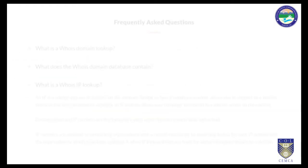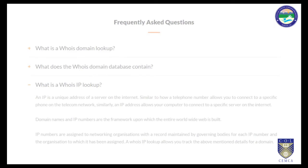What is the WHOIS IP lookup? An IP is a unique address of a server on the internet — very much similar to how a telephone number allows you to connect to a specific phone on the telecom network. Similarly, IP addresses allow your computer to connect to a specific server on the internet. Domain names and IP numbers are the framework upon which the entire worldwide web is built. The WHOIS IP lookup allows us to find the IP addresses assigned to a particular domain, using which a lot of information can be gathered.